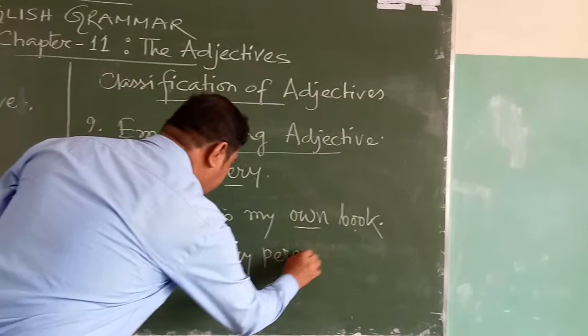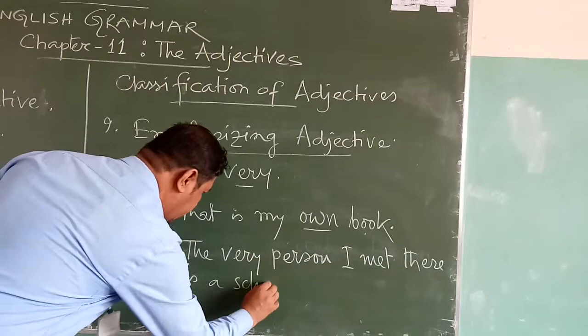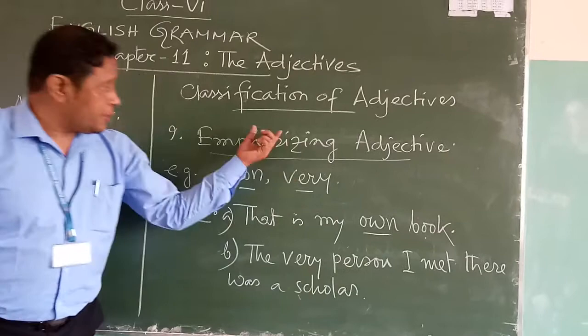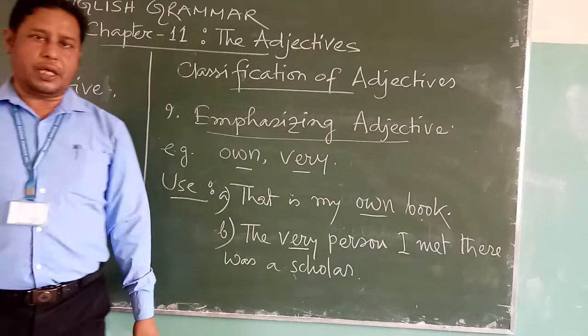The second example: 'The very person I met there was a scholar.' Here the word 'very' qualifies the noun 'person'. That is why it is an emphasizing adjective — because it emphasizes the person in this sentence. This is how emphasizing adjectives can be described.